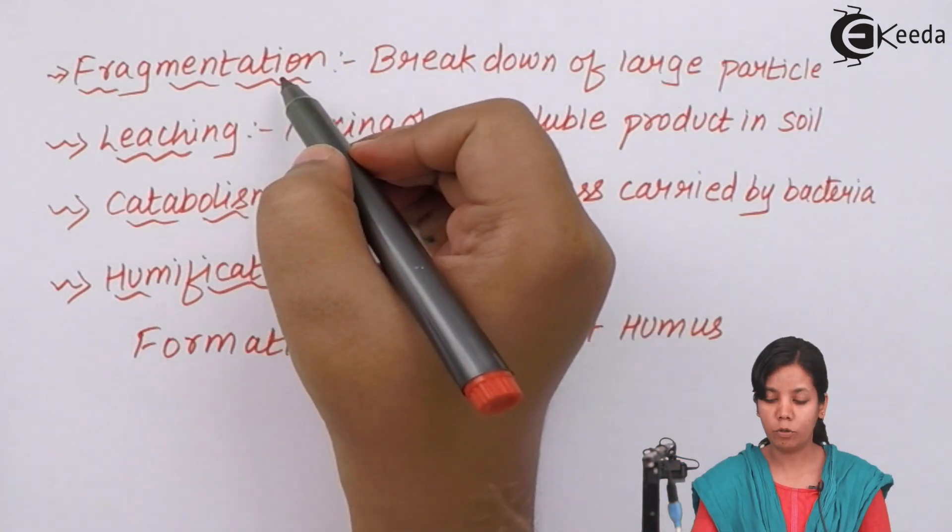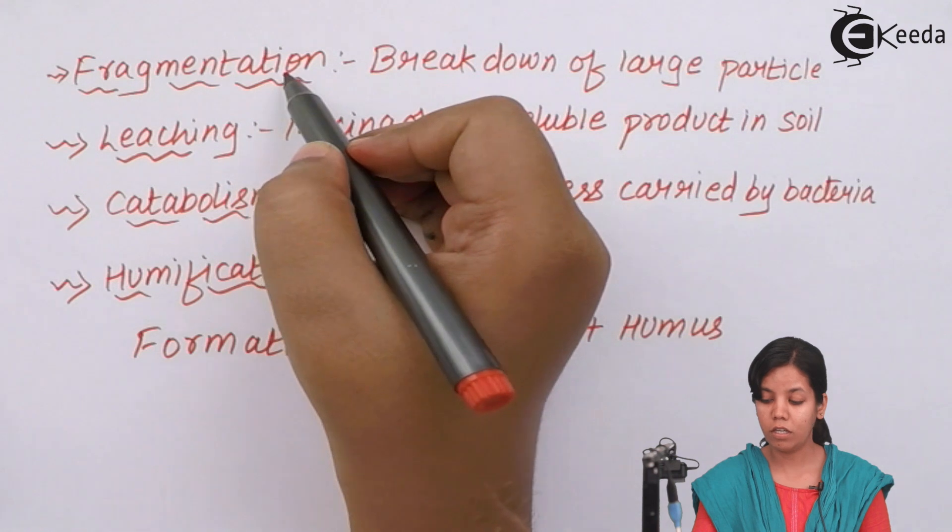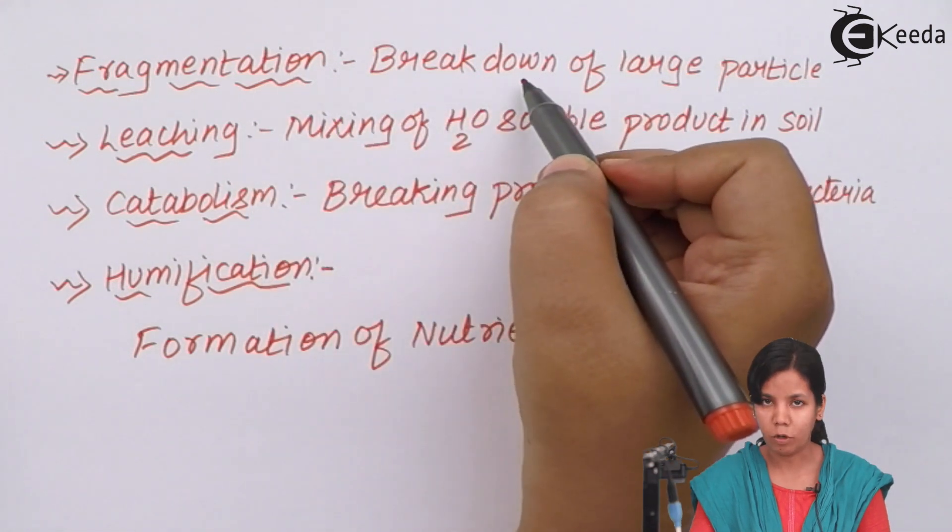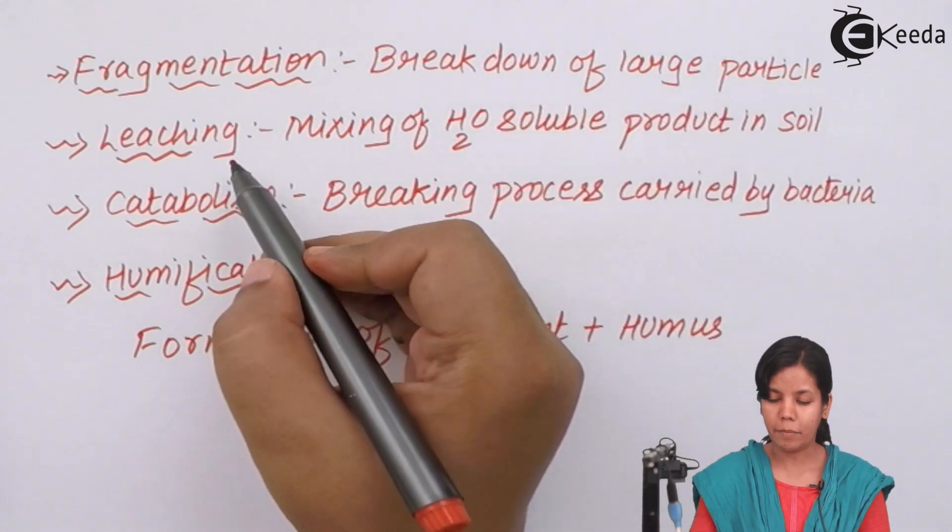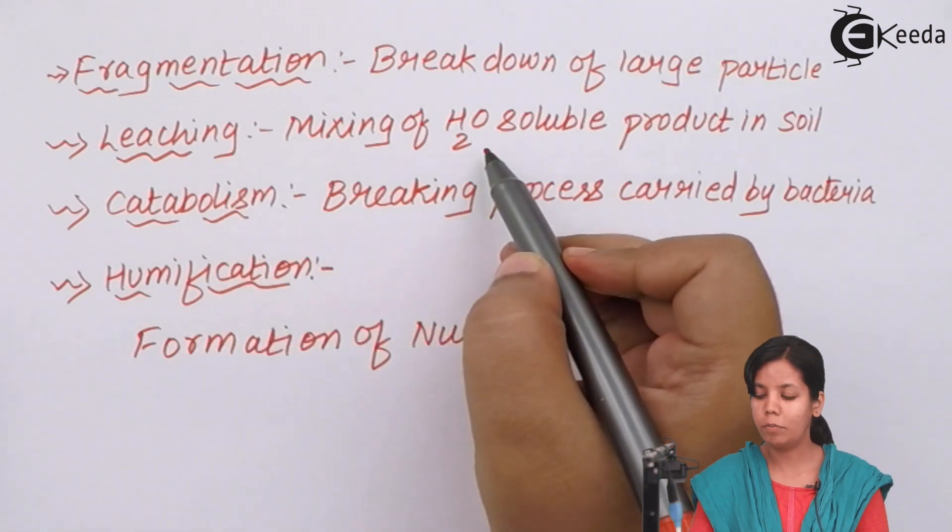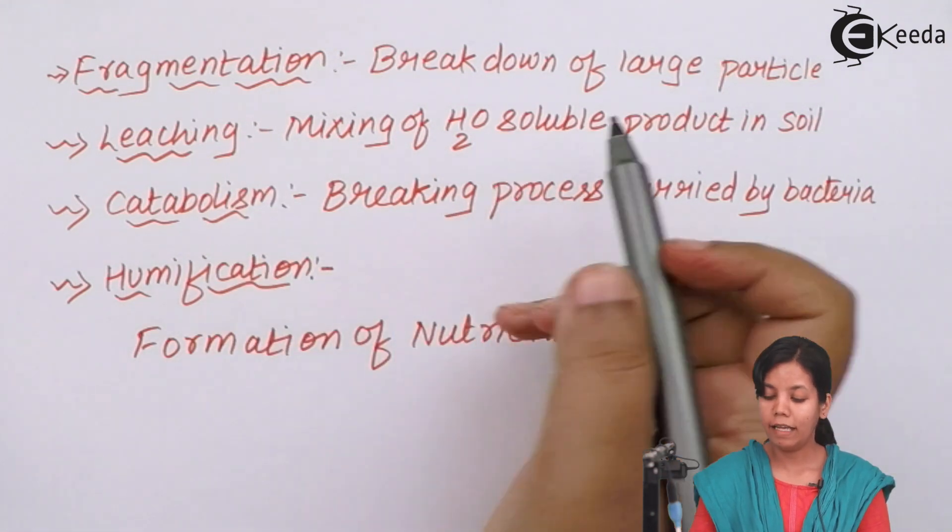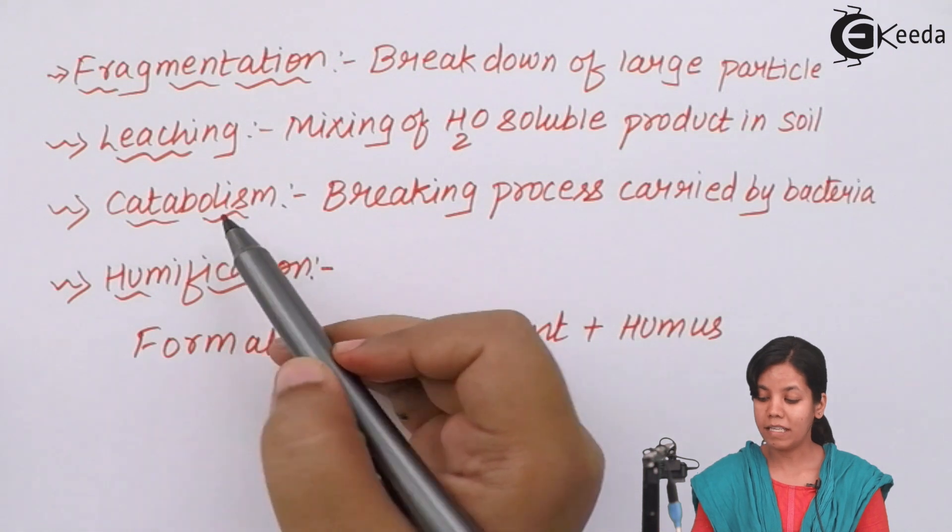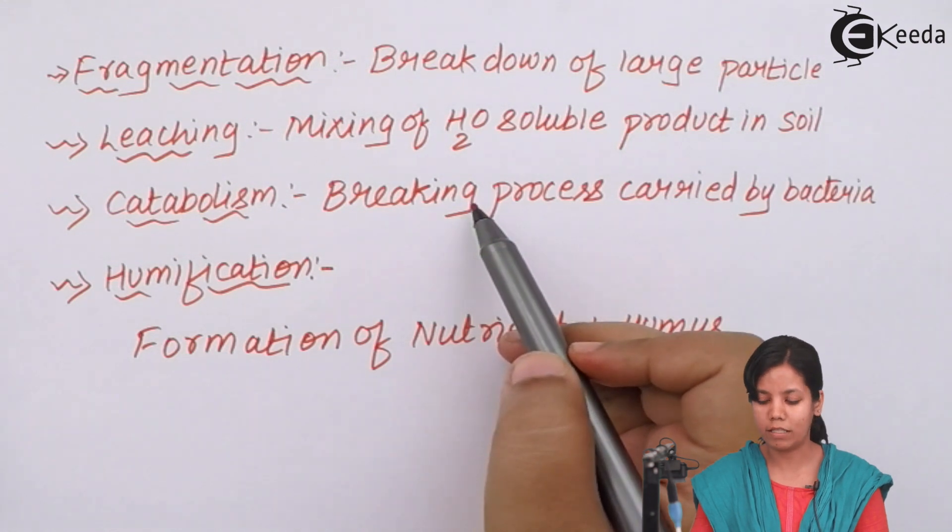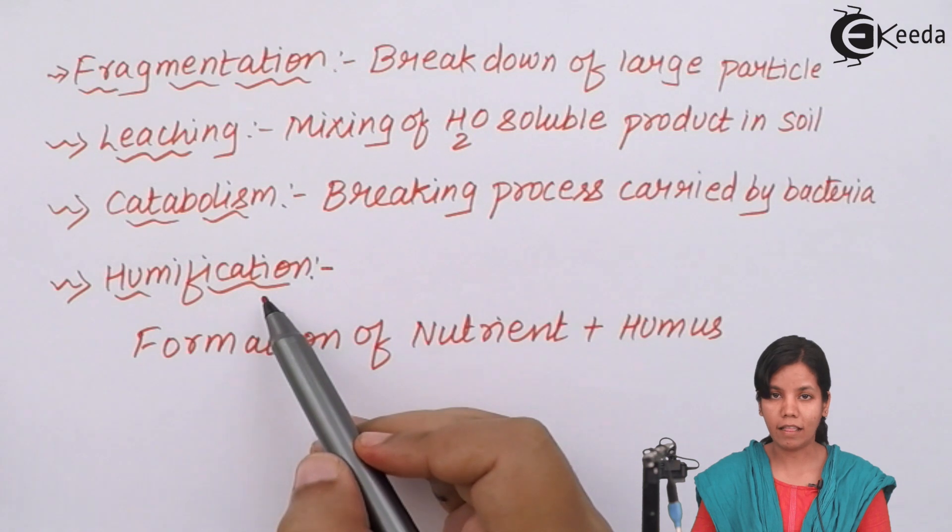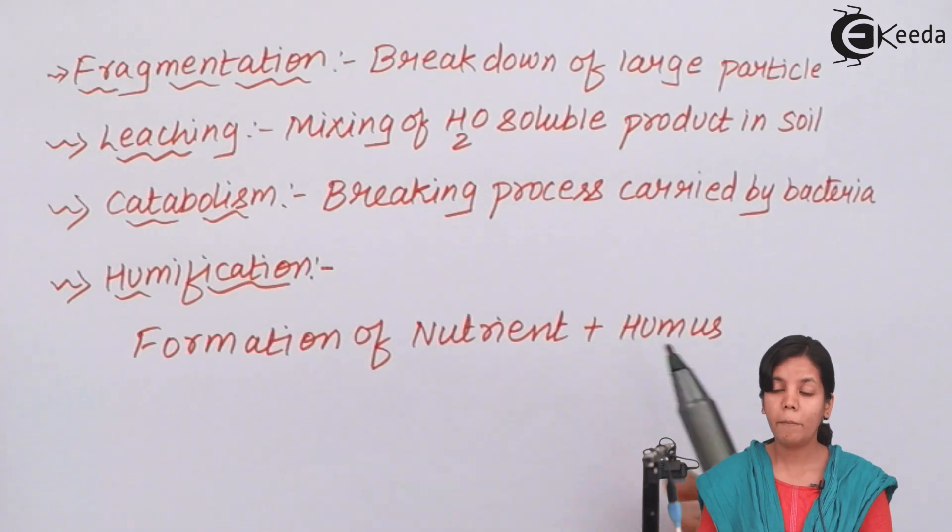The four steps of decomposition are fragmentation, that is breaking down of larger molecules or complex molecules into simpler molecules. Fragmentation is nothing but breaking down in pieces. The next step is leaching, mixing of water soluble products into soil. Catabolism is nothing but a process that is carried out by bacteria present inside soil into simpler compounds or nutrients you can say. And the last step, humification, this is nothing but formation of nutrients plus humus. Humus is soil-like particle.